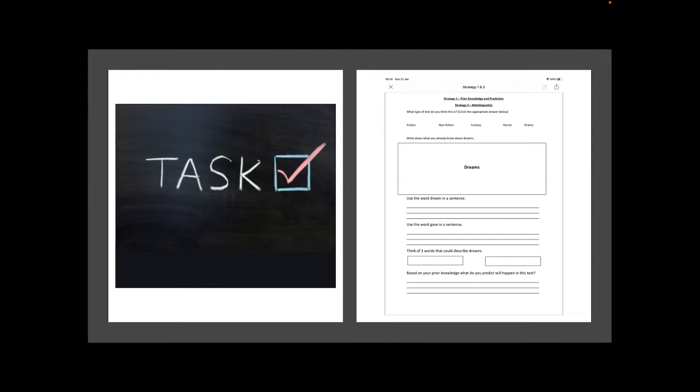Now it's time for you to pause this video and begin task one and two. So it tells you clearly there in the tasks. You can also find these in the teams file. It asks you first of all, what type of text do you think this is? Do you think it is a fictional text, non-fiction, fantasy, horror or a drama? So based on your prior knowledge and the title, what genre do you think this text might have?